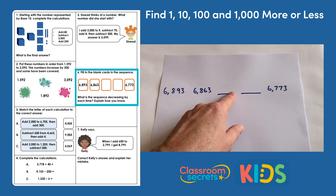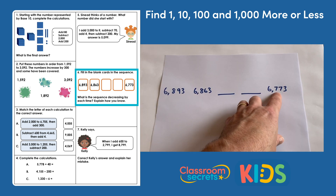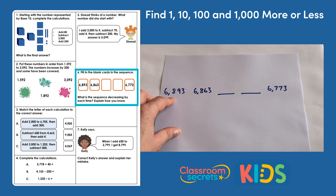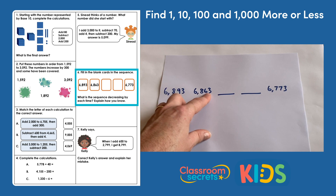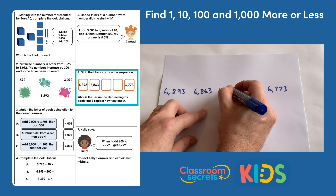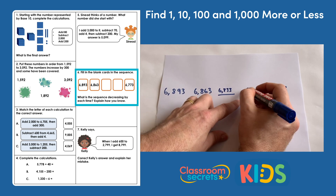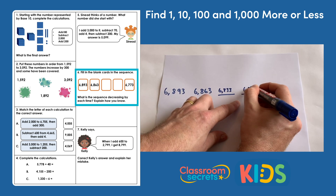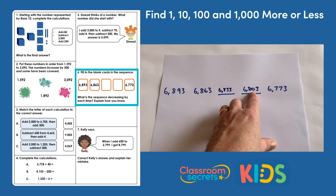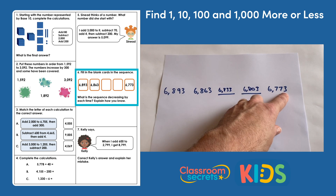We can check that by filling in the two missing numbers, subtracting thirty each time, and we should reach six thousand seven hundred and seventy-three. Subtracting thirty gives six thousand eight hundred and sixty-three, then six thousand eight hundred and thirty-three, then six thousand eight hundred and three, and then subtracting another thirty takes us into the seven hundreds: six thousand seven hundred and seventy-three. That is correct.